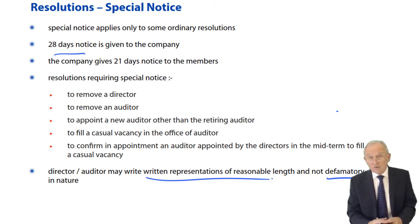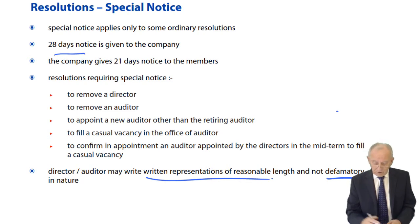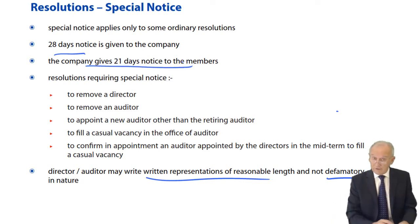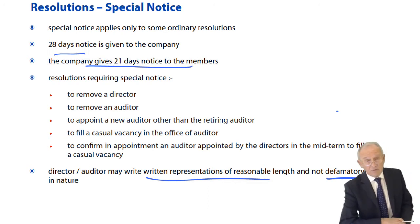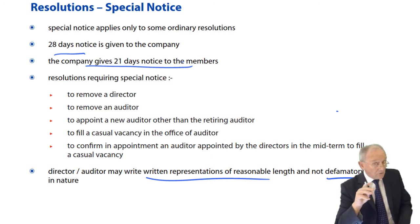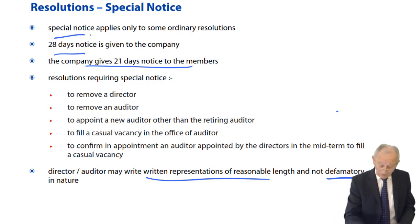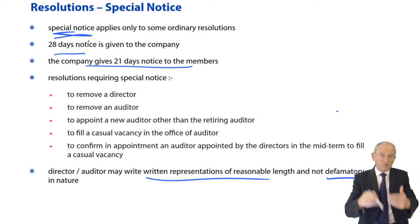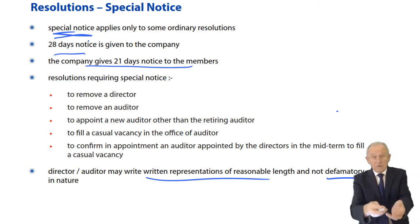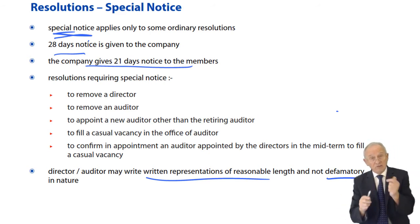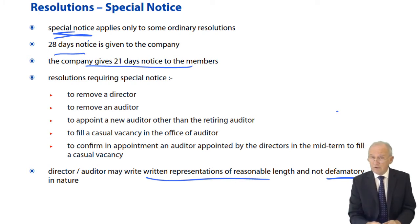The court may give relief and say no, you don't need to send those out because they are defamatory in nature — you are excluded from the requirement of circulating them amongst the members. Normally, non-defamatory written representations of reasonable length will be circulated to members. Not only that, but the registrar also gets a copy of this special notice — the 28-day notice given to the company — and special notice to the members.